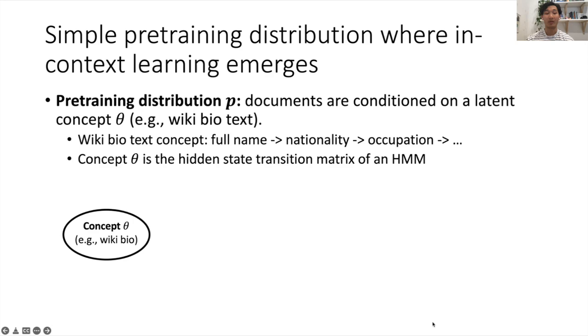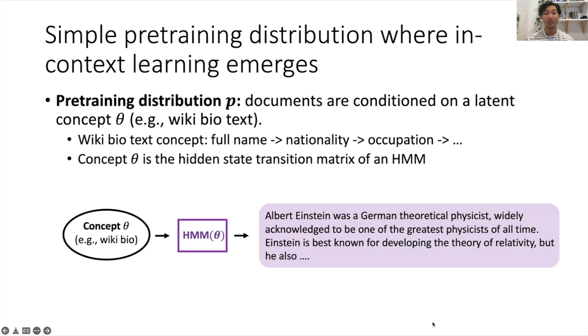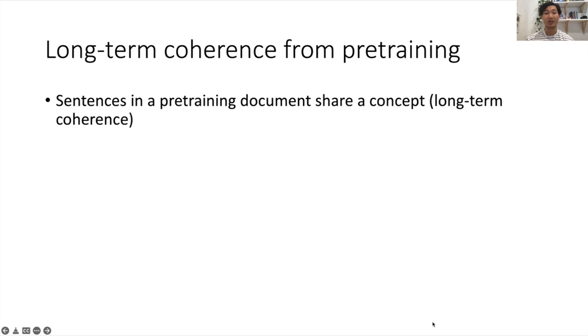So to sample a document, we first sample a concept theta, we condition on that to define an HMM, and then we sample the document. The sentences in these pre-training documents share a concept, meaning that they have a long-term coherence throughout the document. So to predict coherent next words, the language model must implicitly learn to infer the shared concept internally in order to predict the next words.